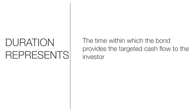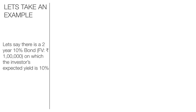We all know that the value of the bond is nothing but the present value of the cash flows that are expected to accrue from the bond. For example, let's say there is a 2-year 10% bond — that is a 2-year bond which pays a coupon of 10% and has a face value of 1 lakh — on which the investor's expected yield is 10%. When the coupon of the bond is equal to the yield, the price of the bond will obviously be equal to par, that is 1 lakh.